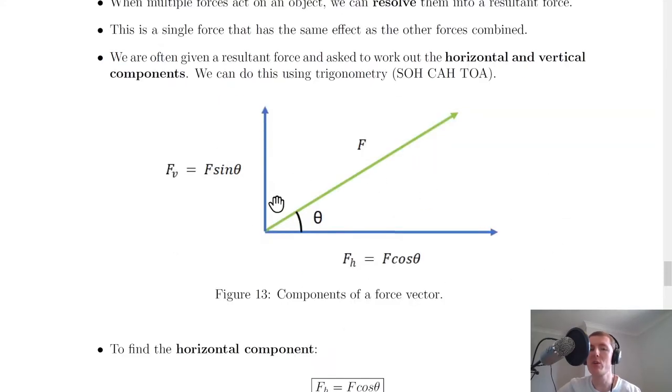If we look at the picture here, you'll see we have a resultant force F, and we can resolve this into its two perpendicular components: a vertical component and a horizontal component. We also have an angle θ, which the resultant force F makes with the horizontal.